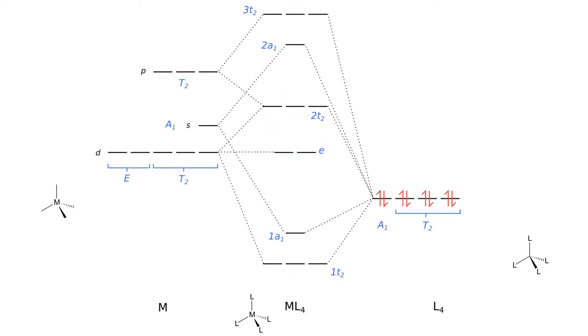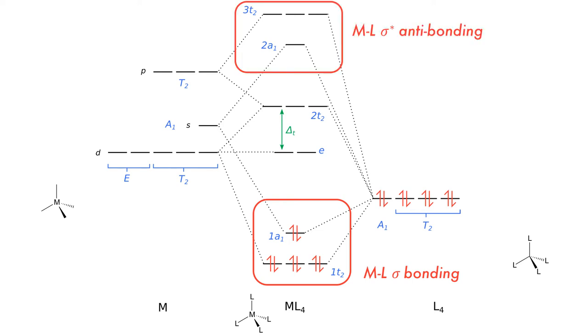Going back to the molecular orbital diagram, the T2 set that started out as pure metal D orbitals is mixed with the T2 set from the P orbitals, which causes an increase in energy, but these point away from the incoming ligands. The four ligand Lewis pairs fill in the metal ligand sigma bonding orbitals. The four orbitals at the top are the metal ligand sigma star antibonding with the metal D orbitals in the middle.